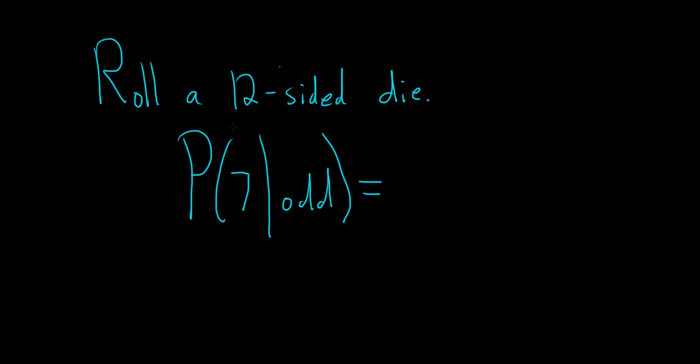In this problem, we're going to roll a 12-sided die, and we want the probability of rolling a 7 given that we know it's odd. That's what this line means.